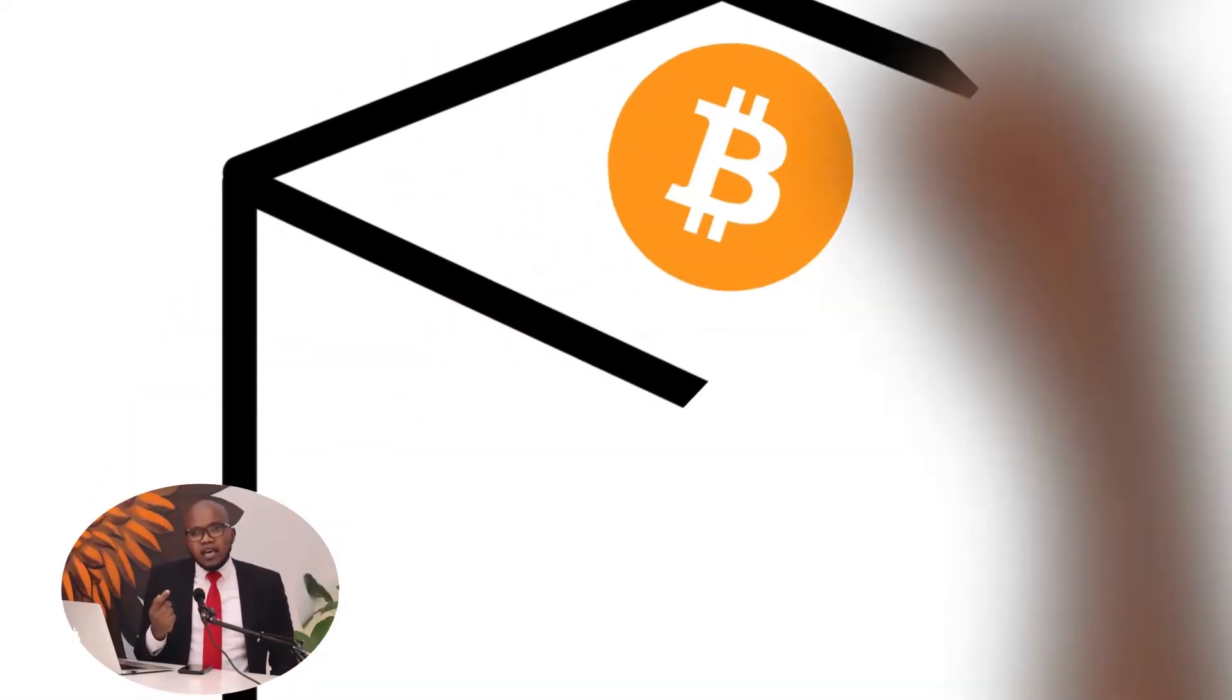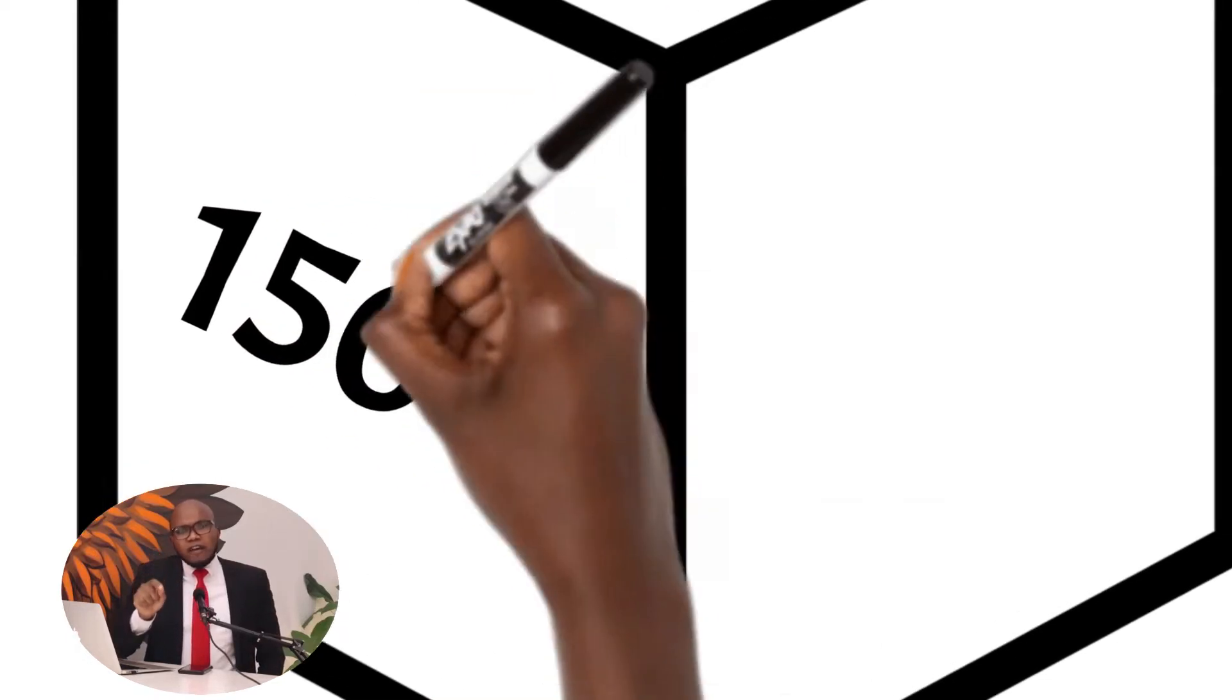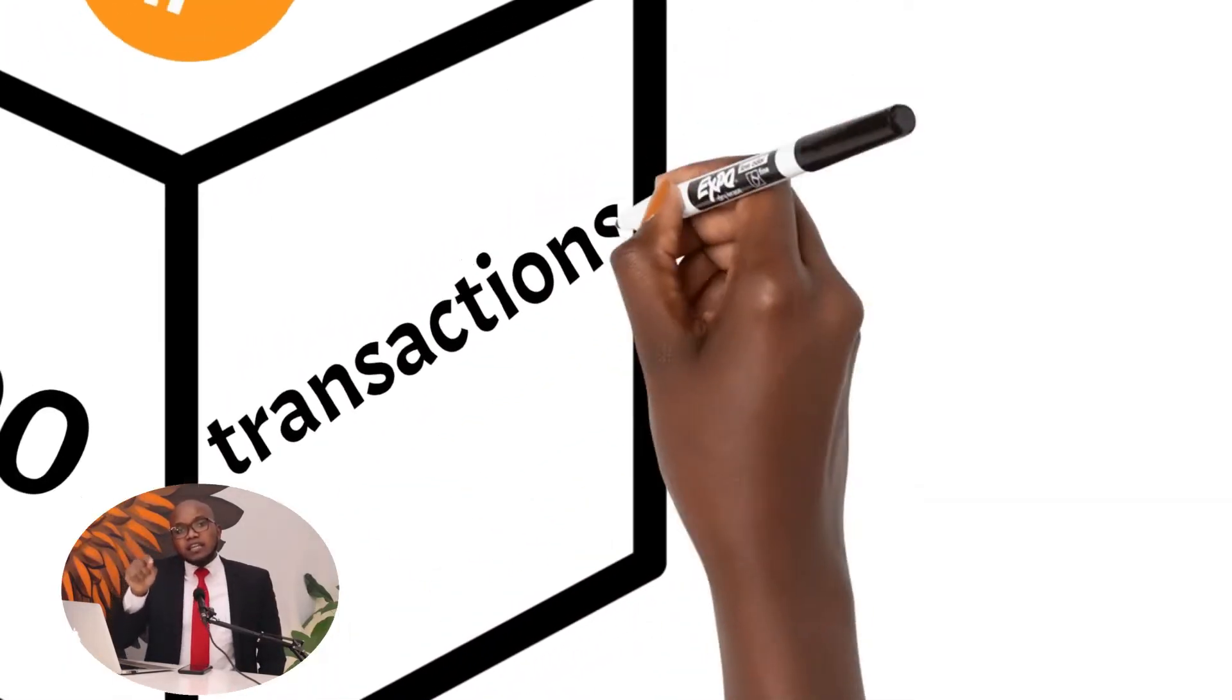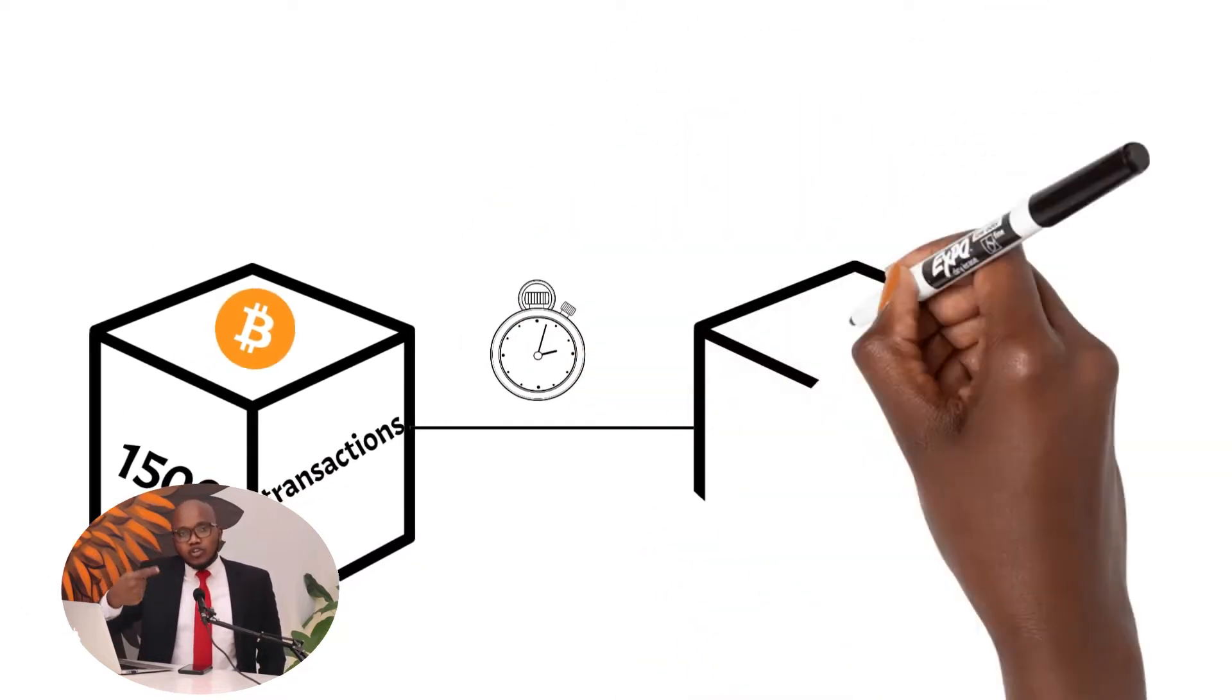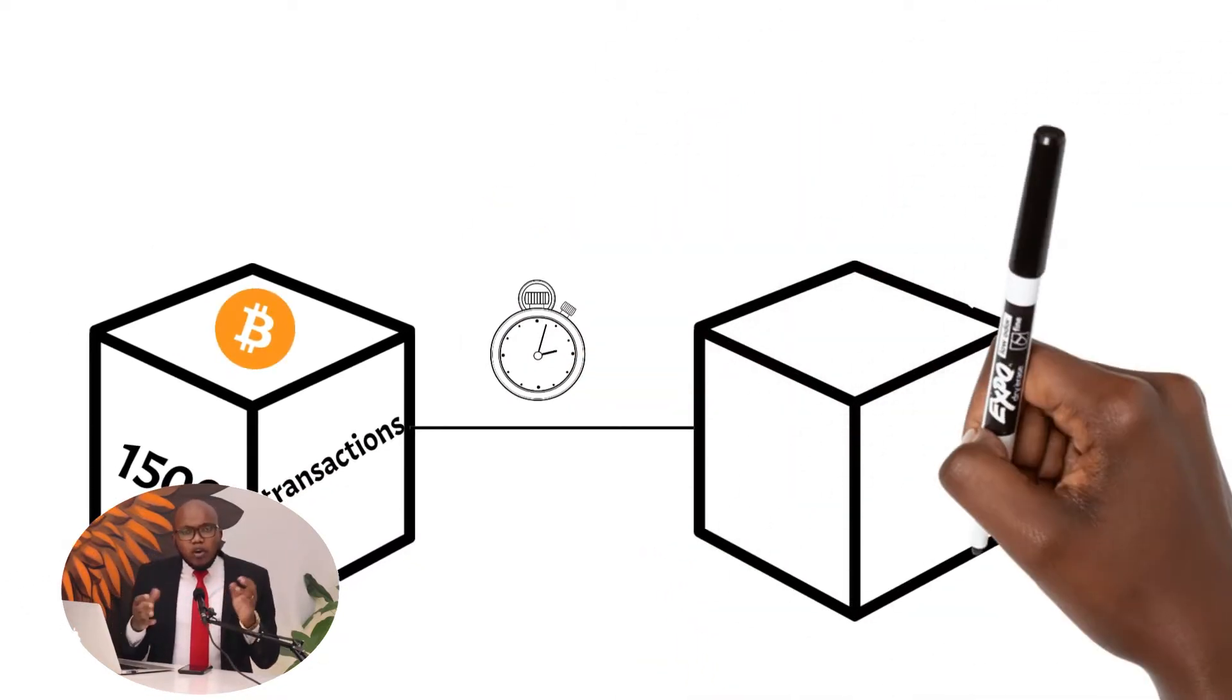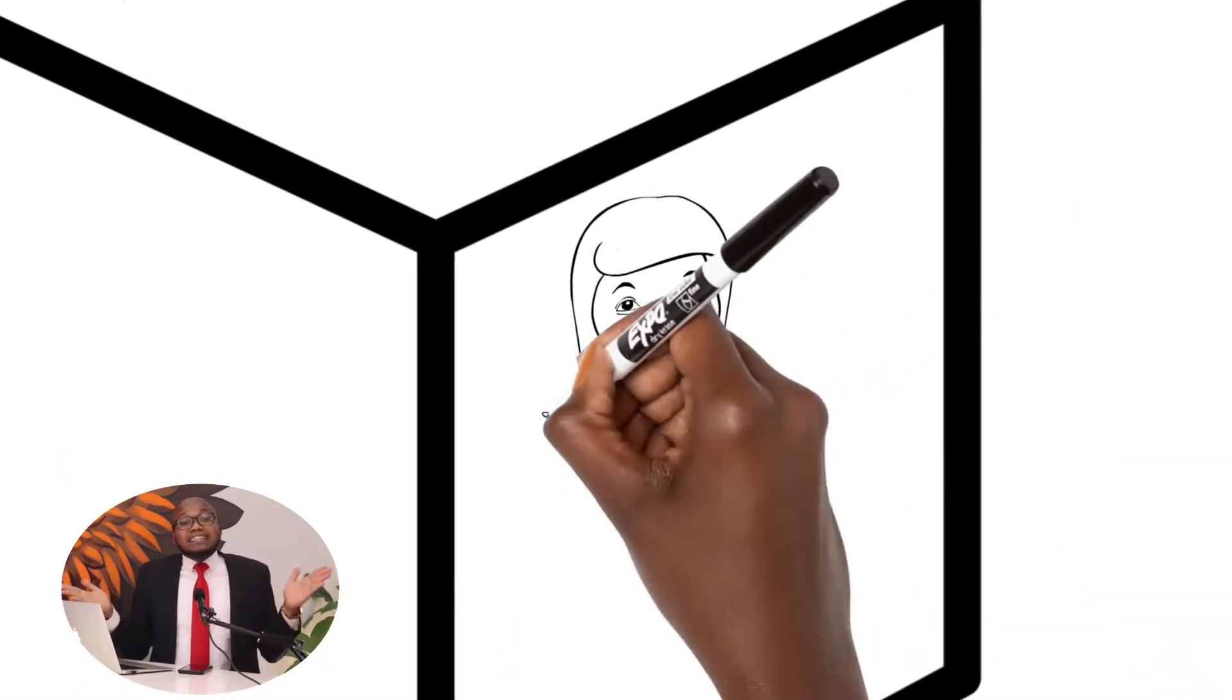Something to note about the blocks: each different blockchain has a limit of the numbers of transactions or maybe a limit of the data that it can take in a block. For example, the Bitcoin blockchain can take up to a maximum of 1500 transactions in a block.